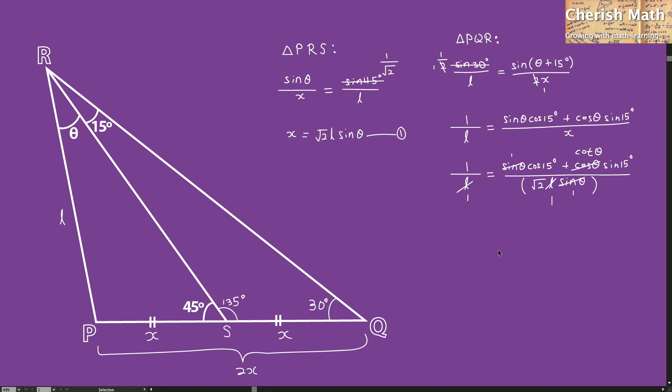We are now close to the final step. By making theta the subject, after rearranging this equation, theta equals the inverse cotangent of 4 square root of 2 minus cos 15 degrees divided by sine 15 degrees. Using the calculator, the value of theta is 30 degrees.